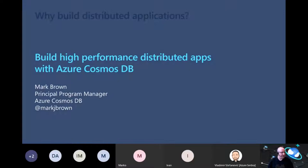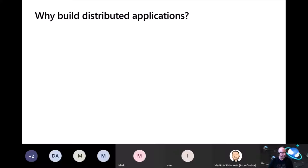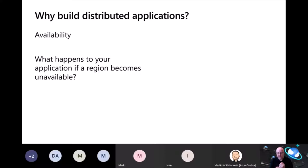To kick it off, let's ask the question: why build distributed applications in the first place? There are two reasons primarily. First is availability. Consider the scenario if you build an application and deploy it into a region in Azure, and then that region becomes unavailable — whether it's for networking or storage or any other reason — that region goes down, your application is down, your business is down.